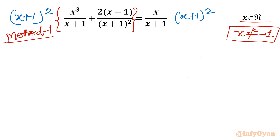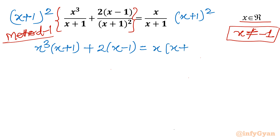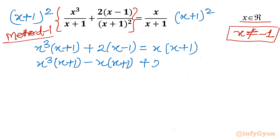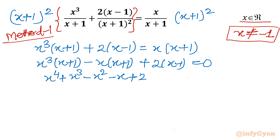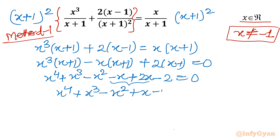Let us expand. We get x³(x+1) plus 2(x−1) equal to x(x+1). Taking all terms to one side: x³(x+1) minus (x+1) plus 2(x−1) equal to 0. Expanding: x⁴ + x³ − x² − x + 2x − 2 = 0, which simplifies to x⁴ + x³ − x² + x − 2 = 0.